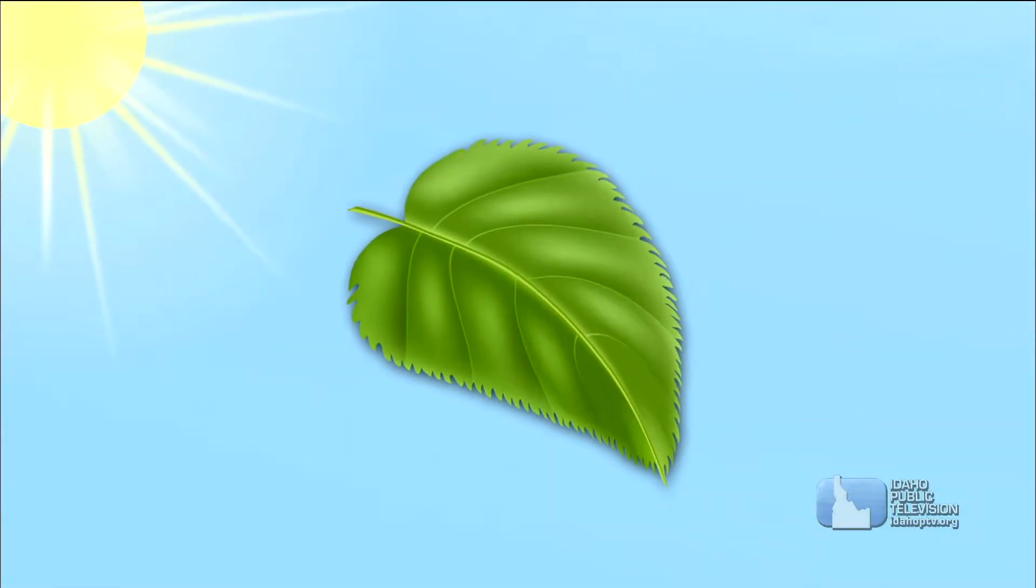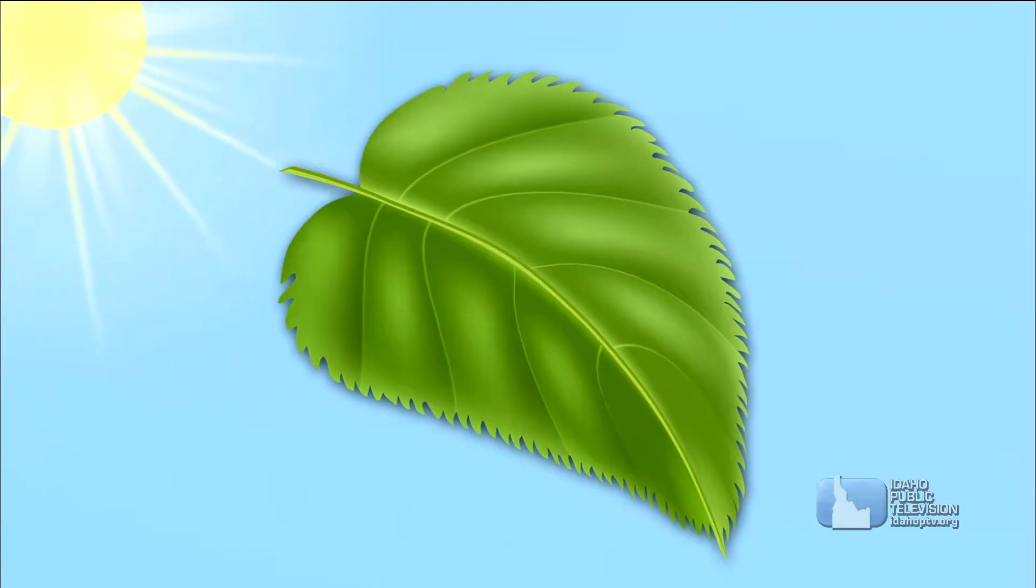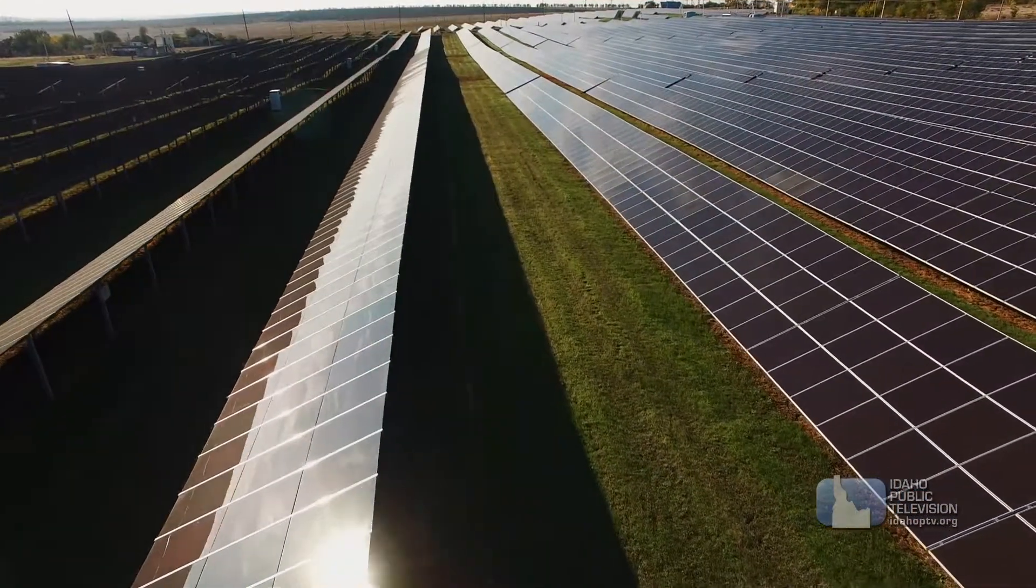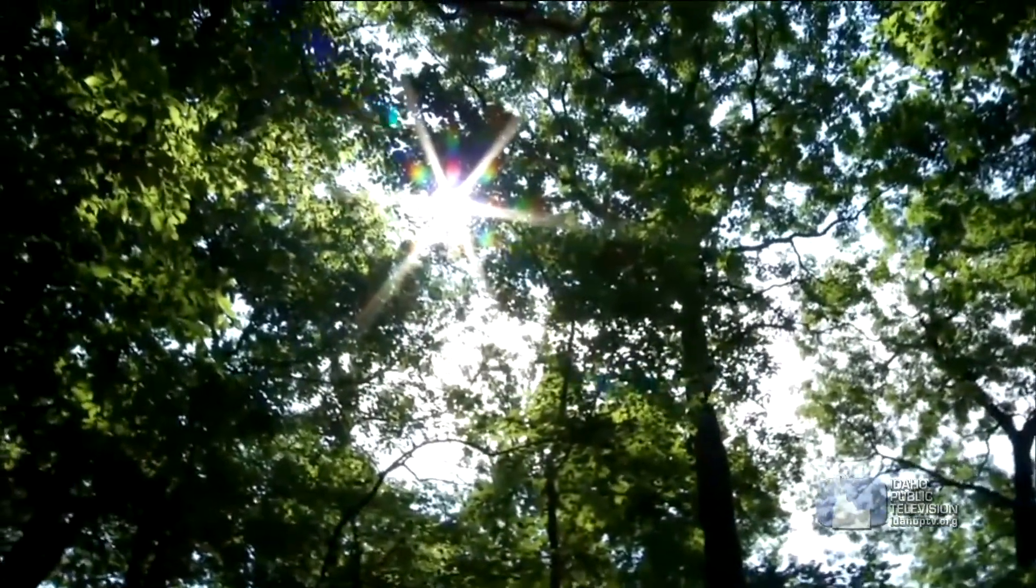Plants use the sun's rays to turn water and a gas called carbon dioxide into food and give off oxygen we need to breathe. But humans also turn the sun's power into electricity using solar panels. So without the sun, there would be no life on Earth.